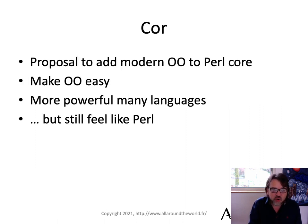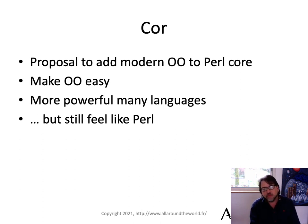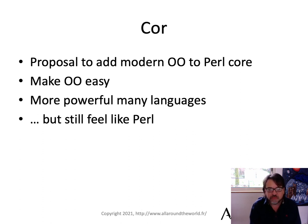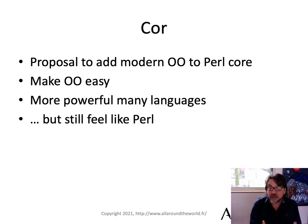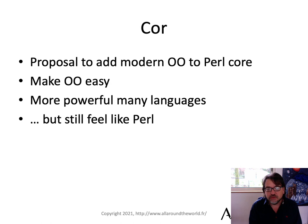Cor is a proposal to add modern OO to the Perl core, and we want it to be easy. I want it to be more powerful than many other programming languages out there. I've done a lot of research into this, a lot of work with other languages trying to understand how they do OO. But it also has to feel like Perl.